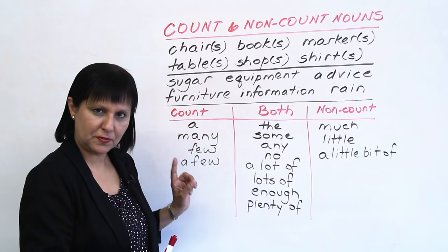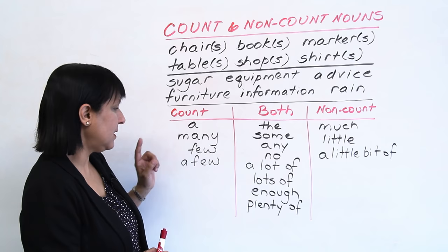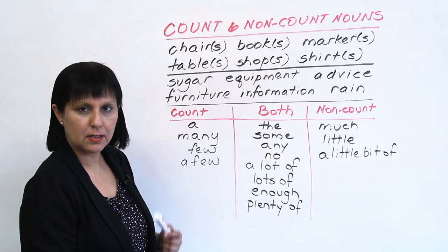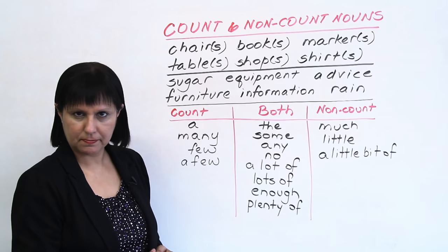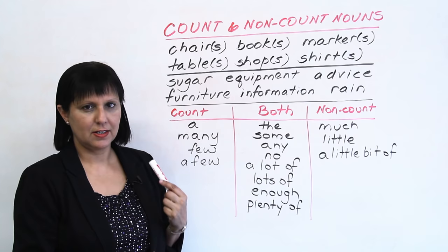So let's look at what we can use with the countable nouns. With countable nouns only, you can use 'a' — like 'a chair' or 'a book' — you can say 'many shops,' 'many shirts,' you can say 'few tables,' or 'a few chairs.' So any of these you can use only with countable nouns.